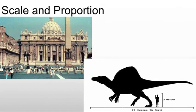When we deal with scale and proportion, scale refers to the size of a building in relationship to the size of an average human. So when we look at a structure, to get a sense of grandeur and awe, we have to build it on a level that's going to be considerably larger than your average human.